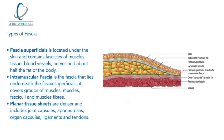To begin with, fascia as a whole is a continual tensional network throughout the body. It's connecting your whole body together essentially, from your big toe to the top of your head and everything in between. It's the white covering that goes across all of the muscles and has been known as a packing material, but as we're going to find out it's much more than that.